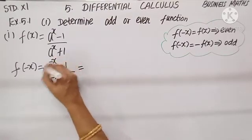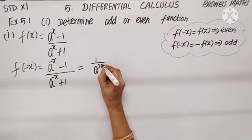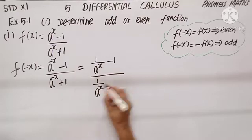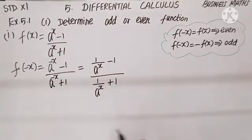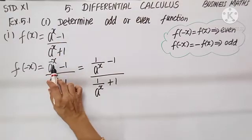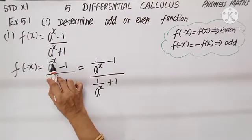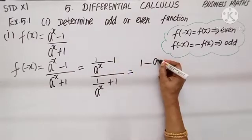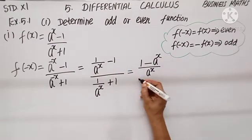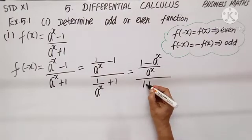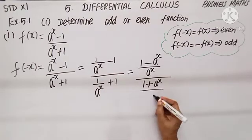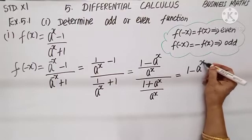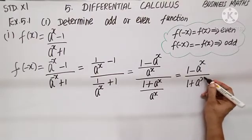My next step: a to the power minus x can be written as 1 by aˣ. Similarly, the denominator also becomes 1 by aˣ plus 1. If the power is negative, we write the reciprocal. Taking LCM, I get (1 - aˣ)/aˣ in the numerator and (1 + aˣ)/aˣ in the denominator. Cancelling the common denominator, I am left with (1 - aˣ)/(1 + aˣ).